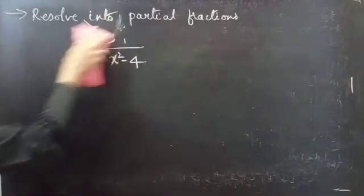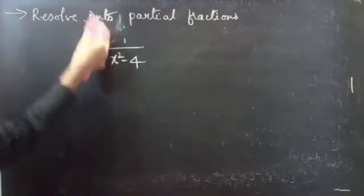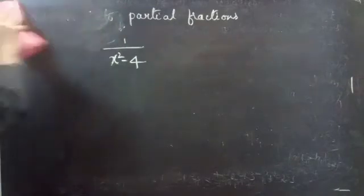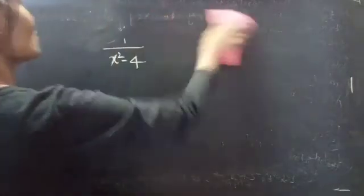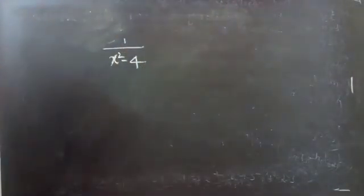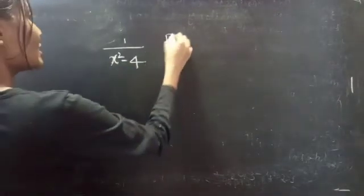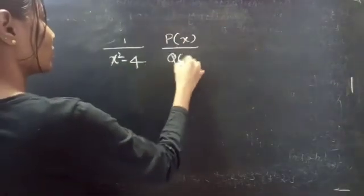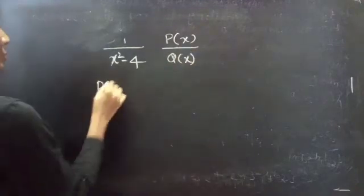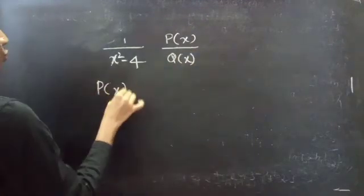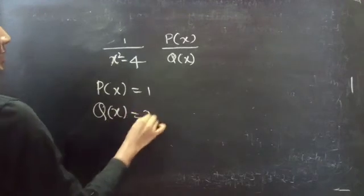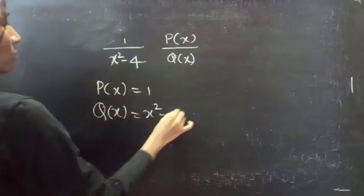We are given a fraction 1 by x squared minus 4. Let's take it as P of x by Q of x. So we have P of x equals to 1 and Q of x equals to x squared minus 4.